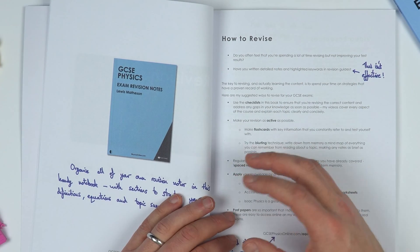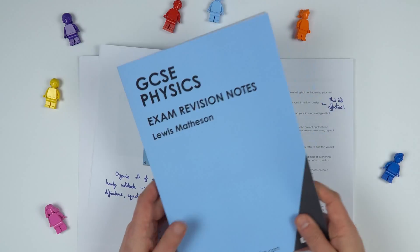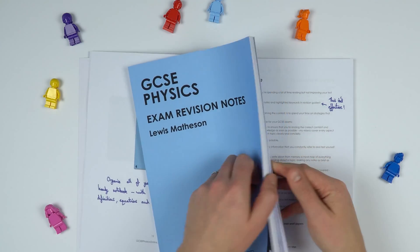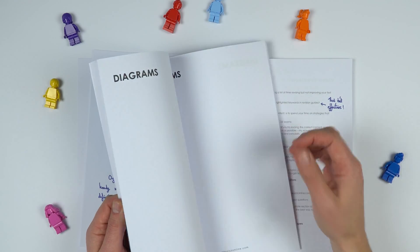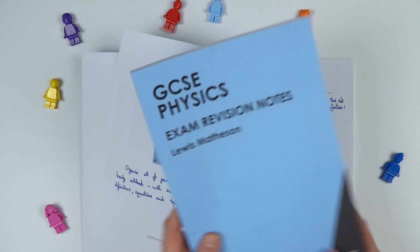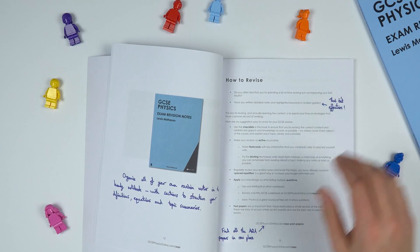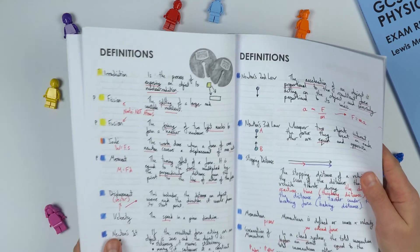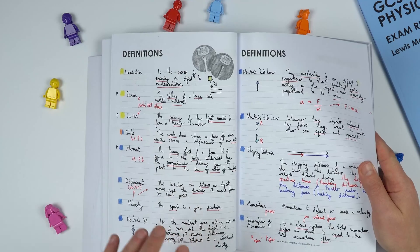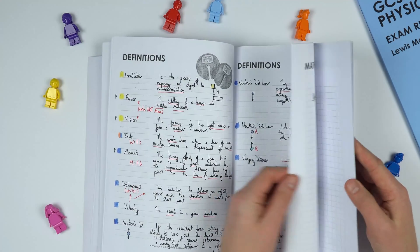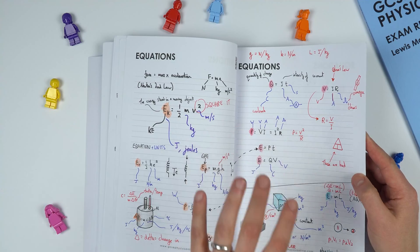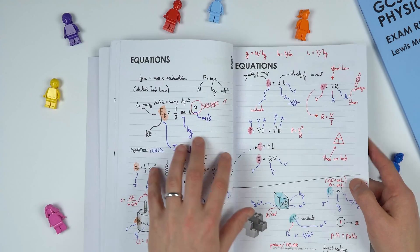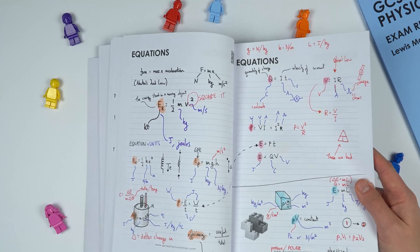The other thing that can really help with your revision is if you get a copy of the GCSE physics exam revision notebook. This has many pages to help structure your revision as you're making your own notes. You can write in your definitions, colour code things, underline the keywords, and basically do this for the whole course. You can add to this as you do more past papers in the future.